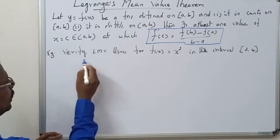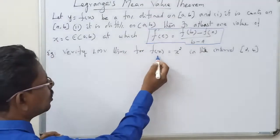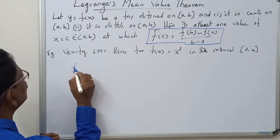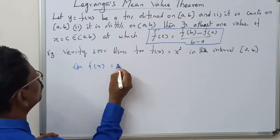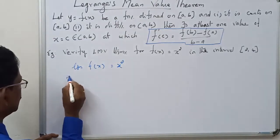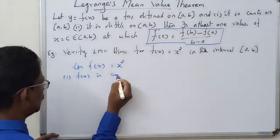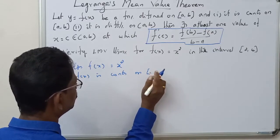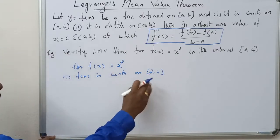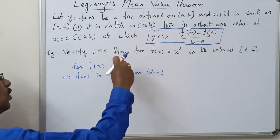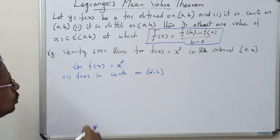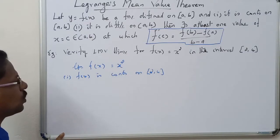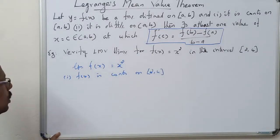First, verify Lagrange's mean value theorem for f(x) = x² in the interval [2, 4]. Given f(x) = x². First condition: f(x) is continuous on closed interval [2, 4]. In between 2 and 4, we put any value in x² and we can get different values, so the curve is going up — therefore the curve is continuous. So f(x) = x² is continuous on closed interval [2, 4].